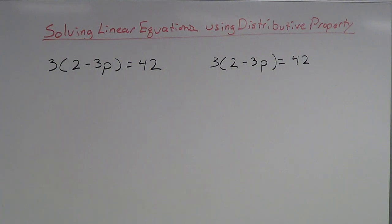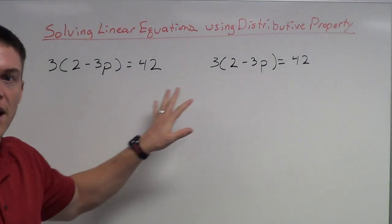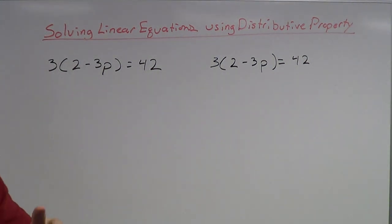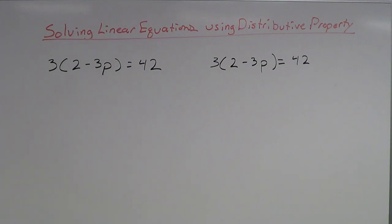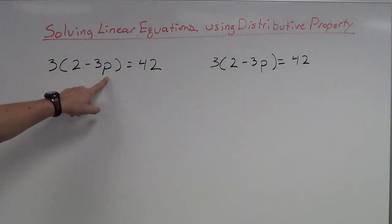When solving any type of equation the idea is to get the variable by itself. In this case we have two equations but notice that both equations are the same. I'm going to show you two different ways to do this — one using the distributive property and one not using the distributive property. The idea is to get the variable, in this case P, by itself.